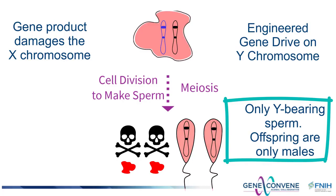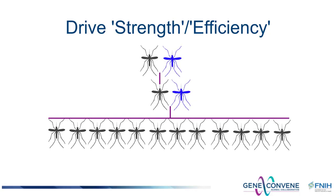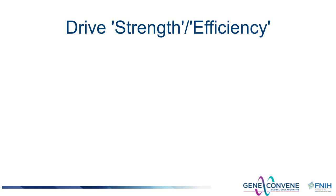The performance of gene drive systems varies, and performance can be expressed in several ways. One way is by referring to the strength or efficiency of the drive. In the case where the transmission advantage of the black allele is maximal — transmitted to all of the offspring and no offspring inherit the blue allele — this is referred to as a strong drive, or an efficient drive. But where the black allele has only a modest transmission advantage, say about 60% versus the expected 50%, that is a weak drive. So we can assess gene drive in terms of strength or efficiency, ranging from low to high, weak to strong.